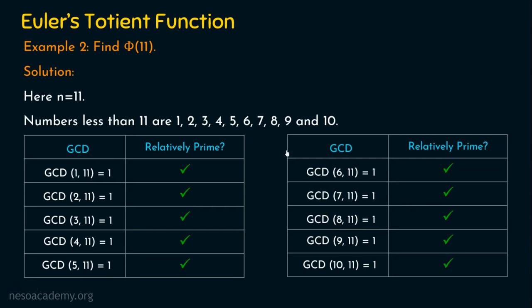There are 10 numbers that are relatively prime to 11. So the answer for this question is phi of 11 is equal to 10.